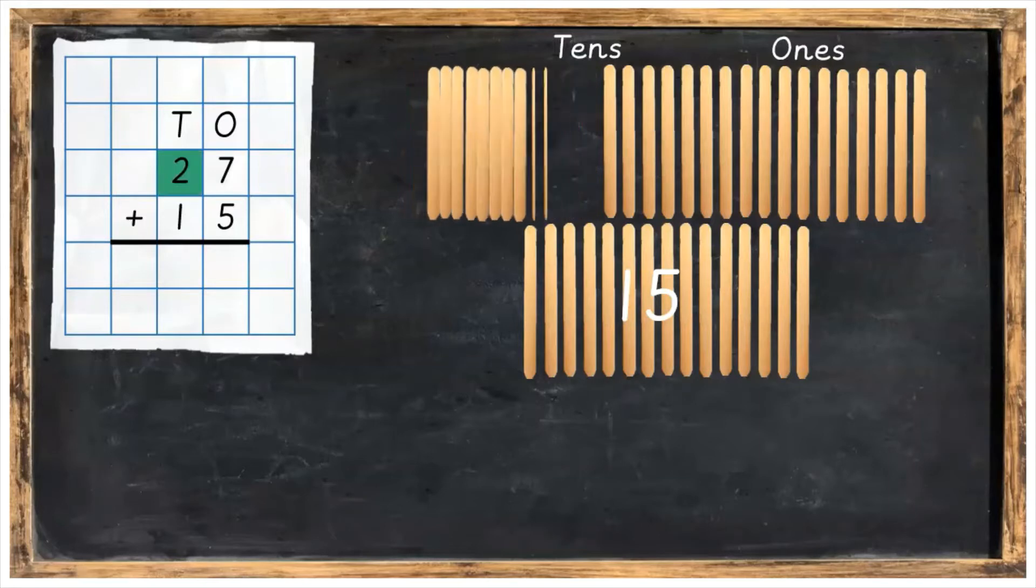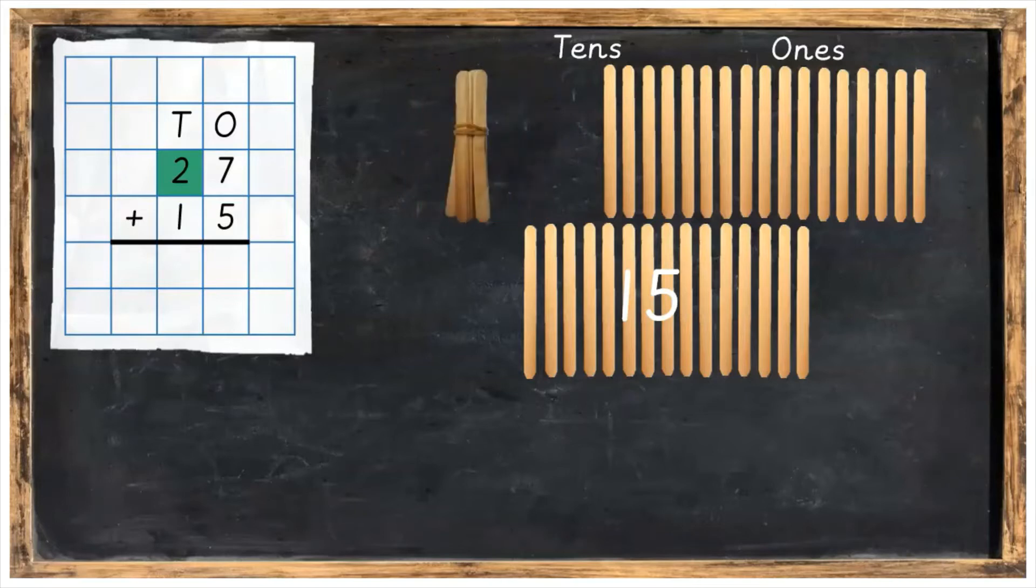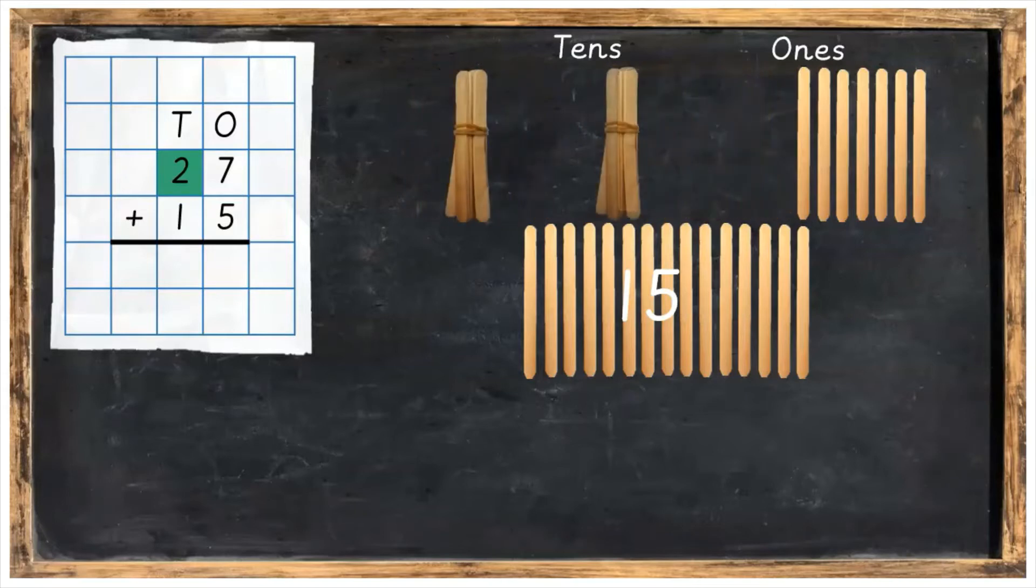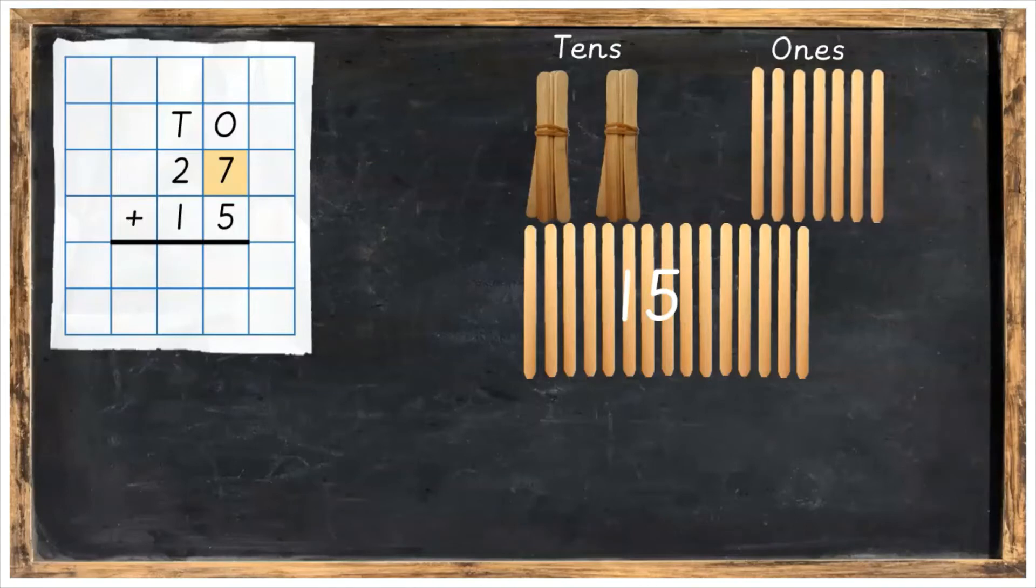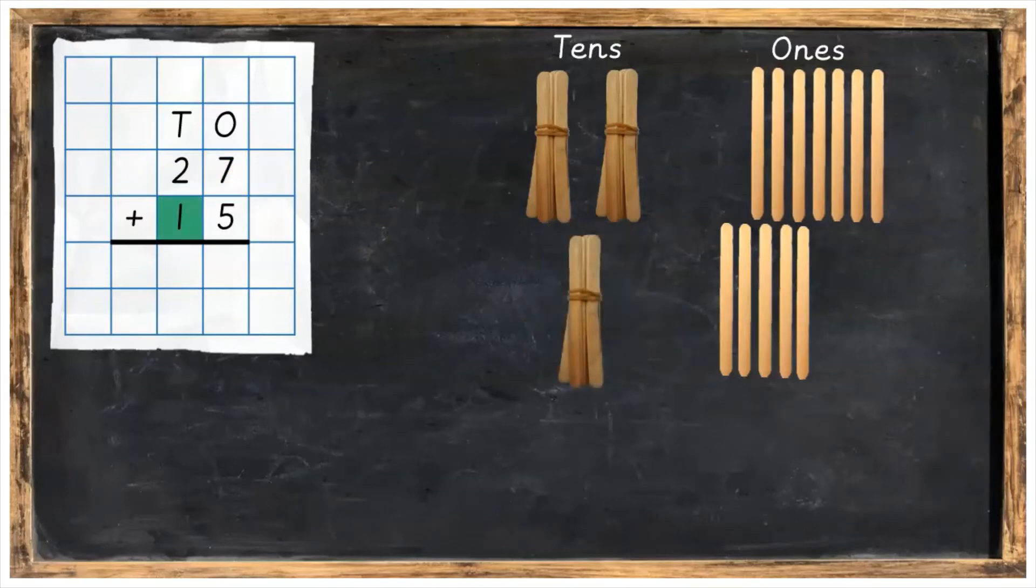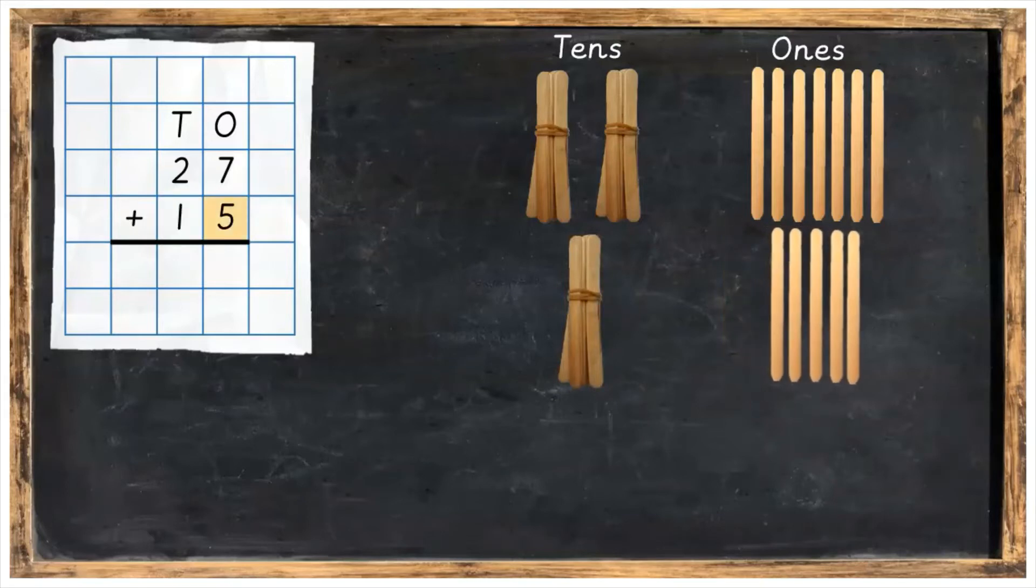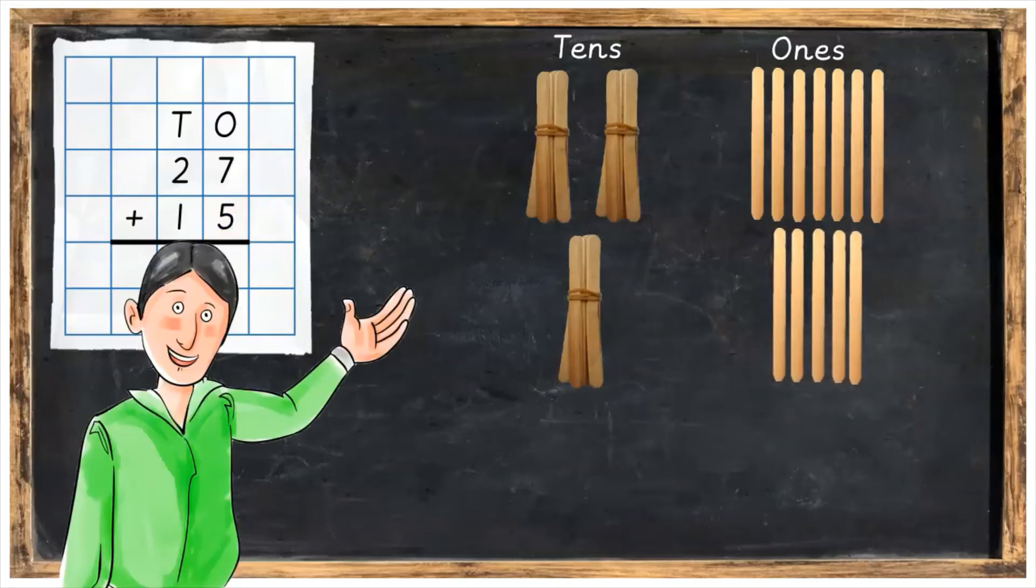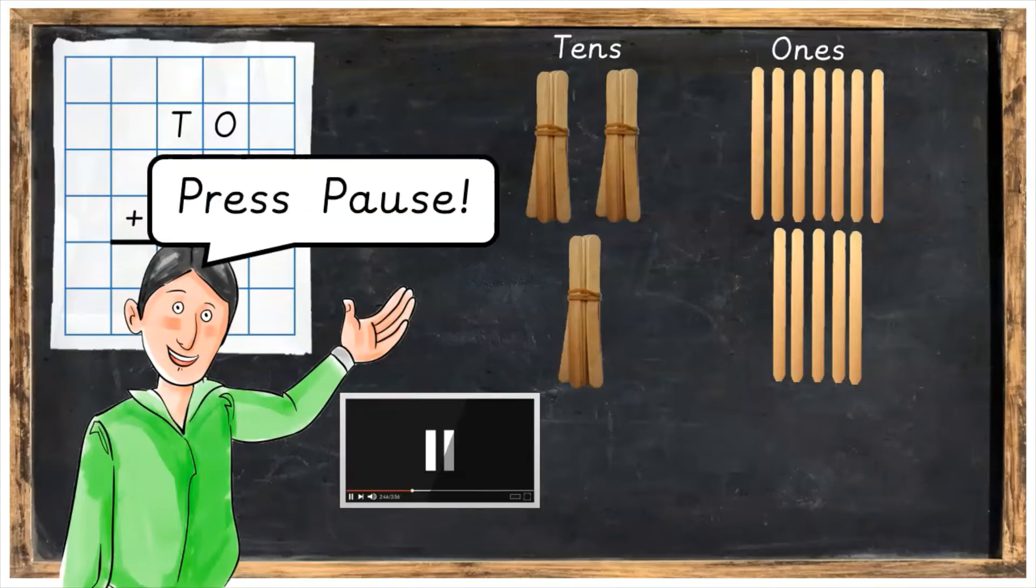So we've got two tens, bundling together into 10 and then we're going to have our seven ones beside that. Underneath that then we're going to have one 10 and five ones for our 15. What I would like you to do now is set out your lollipop sticks just like this, bundling them together into groups of tens and ones. Press pause and then press play when you are ready.